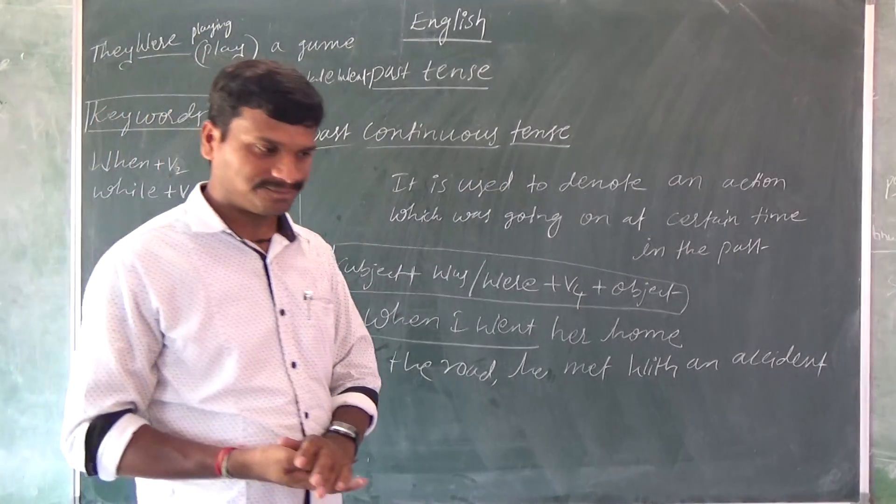One more example: Mr. Raju was writing a poem yesterday at this time. Here 'at this time' is the time reference, and since it refers to the past, the past continuous tense is used. Mr. Raju was writing a poem yesterday at this time.